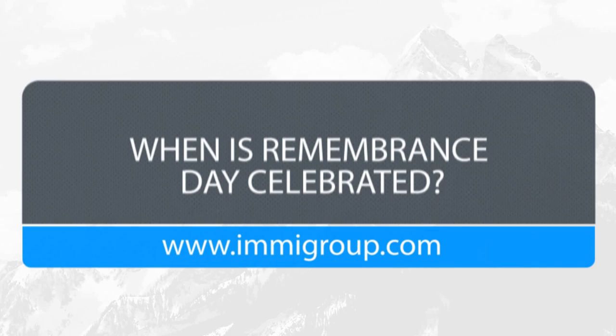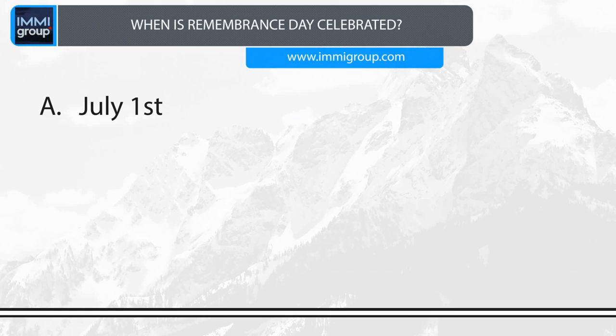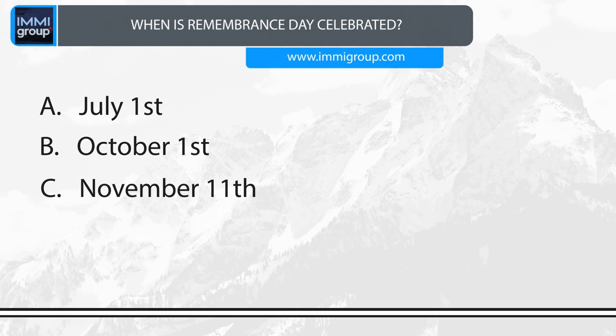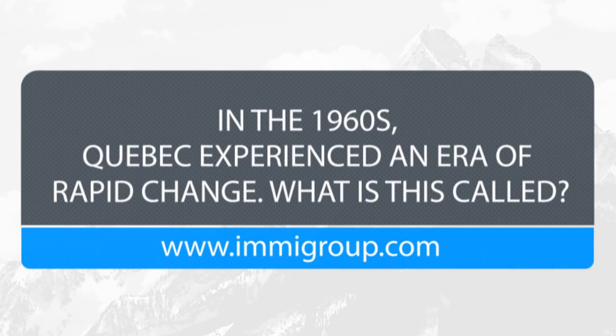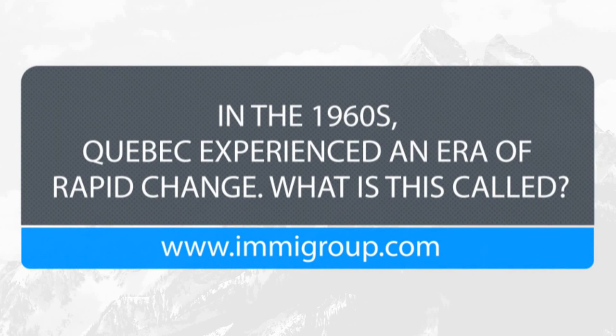When is Remembrance Day celebrated? A. July the 1st. B. October the 1st. C. November the 11th. D. December 25th. Answer: November the 11th.